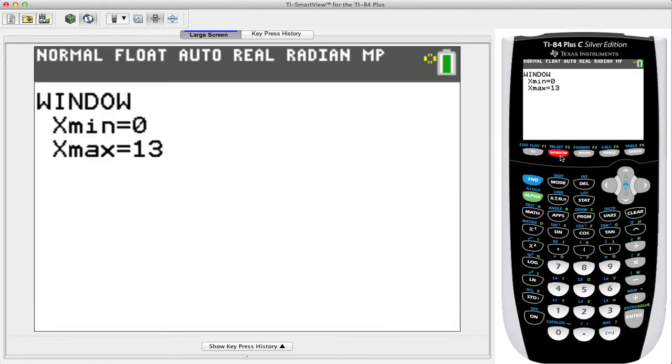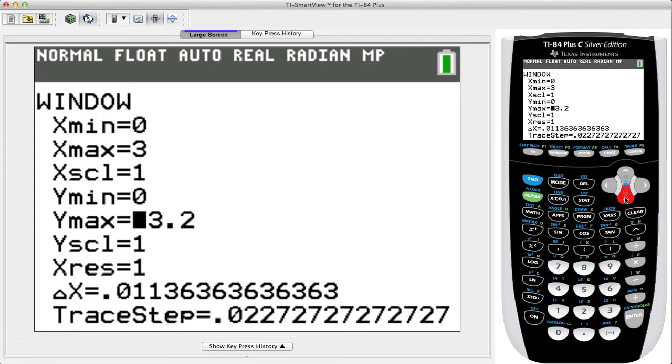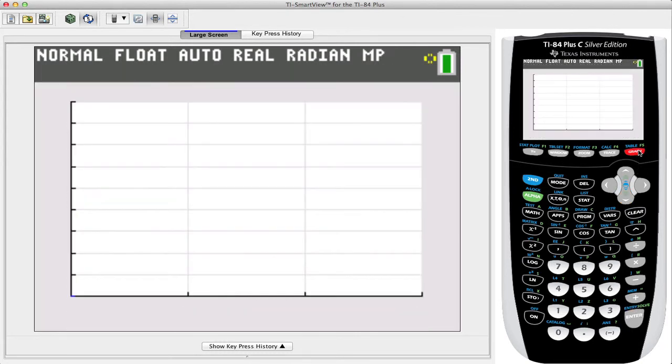So let's go to window. For the window, I'm going to make my x maximum be 3, and I'm going to make my y maximum be 9. And then from here I press graph again, and now I have a nice close-up of the area that I want to look at.